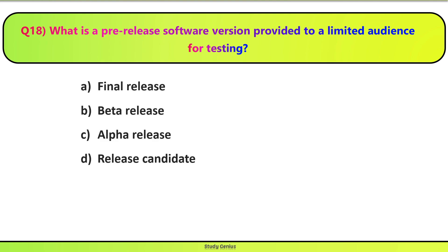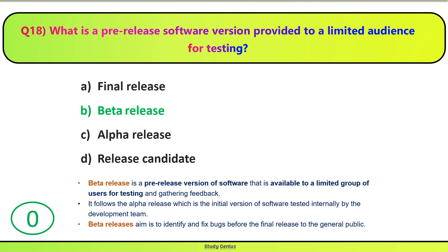Question 18. What is a pre-release software version provided to a limited audience for testing? Pre-release software version kya hai jo limited audience ko testing ke liye provide kiya jata hai — Final release, Beta release, Alpha release, ya Release candidate? Correct answer is B. Beta release is a pre-release version of software available to a limited group of users for testing and gathering feedback. It follows the alpha release, which is the initial version tested internally by the development team. Beta release's aim is to identify and fix bugs before the final release to the general public.